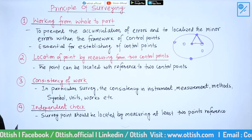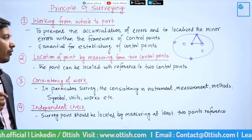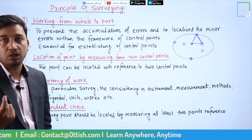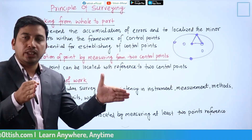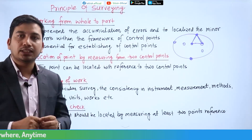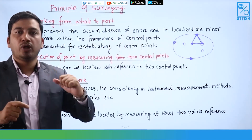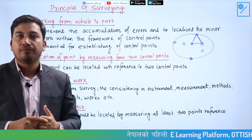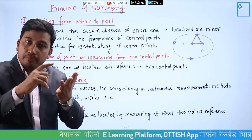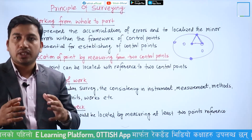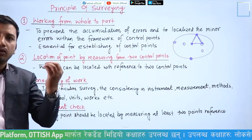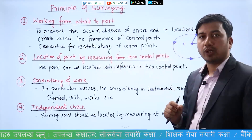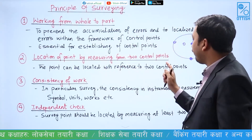Working from whole to part is the concept of location of points by measuring from two control points. With reference to these two points, a third point is located. This is done by measuring the distance, measuring the angle, or measuring both angle and distance. That is the principle: the location of points by measuring from two control points.